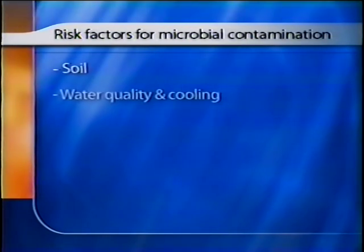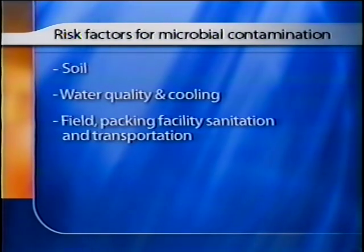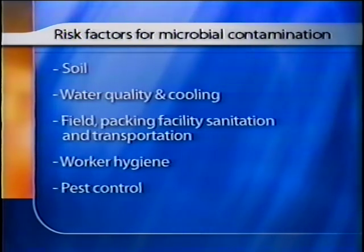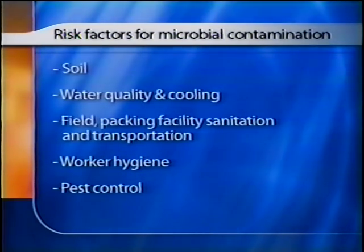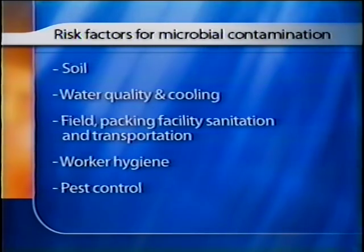Analyzing the risk of microbial contamination includes several major areas of concern: soil, water quality and cooling, field and packing facility sanitation and transportation, worker hygiene, and pest control. Each operator should decide which combination of proper agricultural and manufacturing practices are most appropriate for them. By identifying basic principles of microbial food safety within the processes of growing, harvesting, packing, and transporting fresh produce, you will be better prepared to recognize and address the principle elements known to cause concern to microbial food safety.